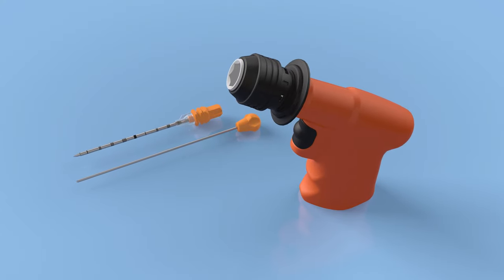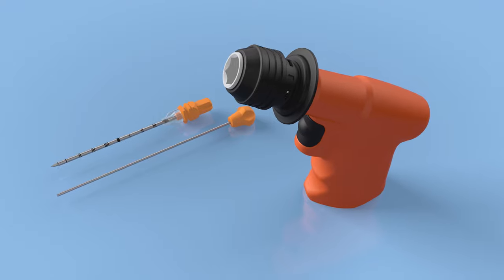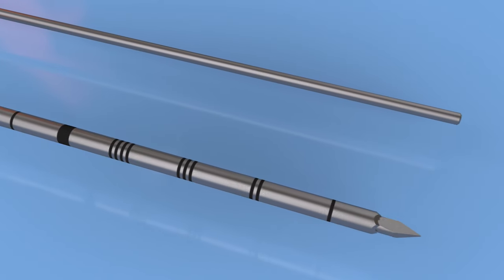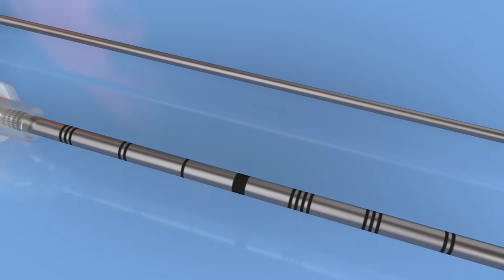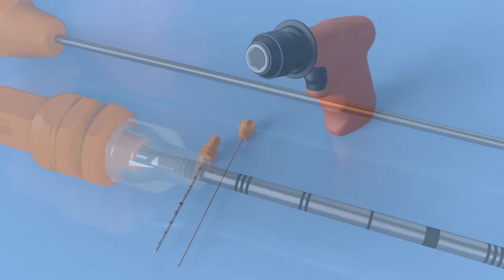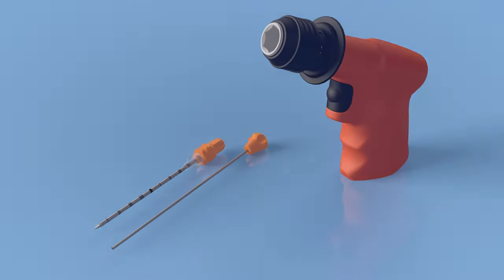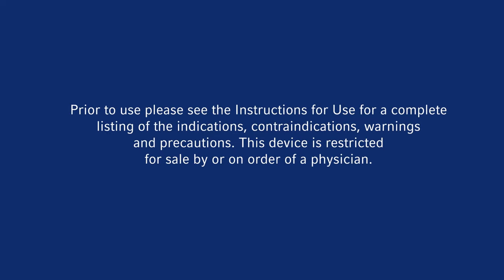The Arrow On-Control Powered Bone Access System from Teleflex represents the first major advance in bone and bone marrow sampling procedures in over 40 years. Prior to use, please see the instructions for use for complete listing of the indications, contraindications, warnings, and precautions.